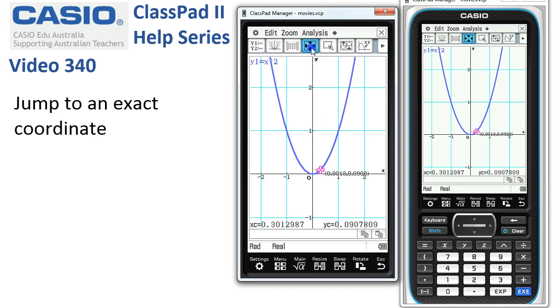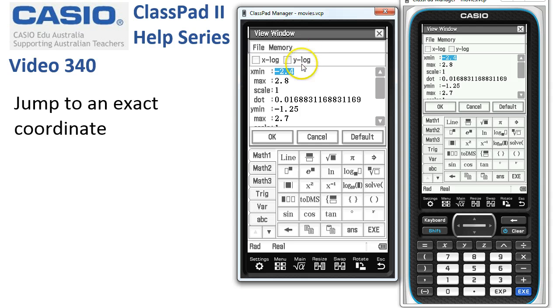These are reflected, if we tap onto the view window settings, by the dot setting here. If the dot settings are not a nice integer, then we're not going to get very nice increments when we trace. We'll cancel that.